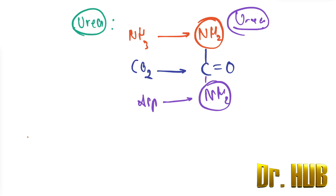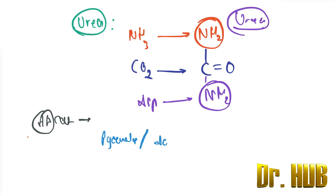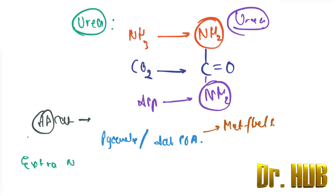Amino acid catabolism results in the formation of common metabolites such as pyruvate and acetyl-CoA, which serve as metabolic fuels. The excess nitrogen generated by this process is converted to urea and excreted by the kidneys.